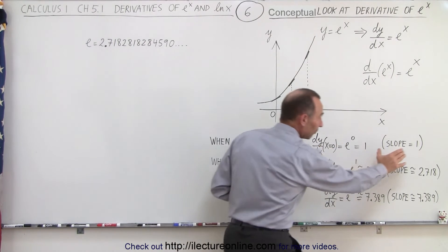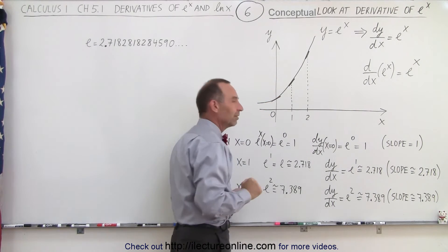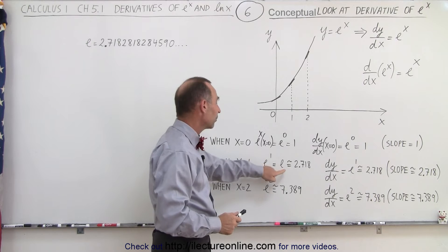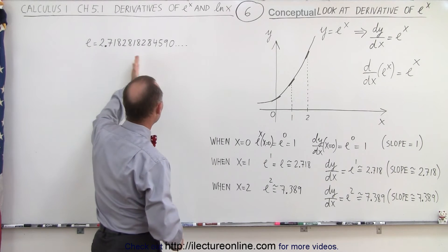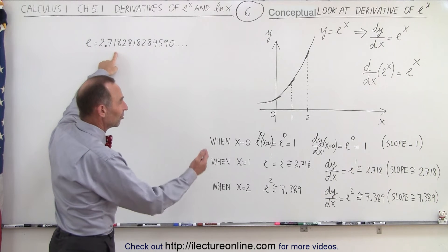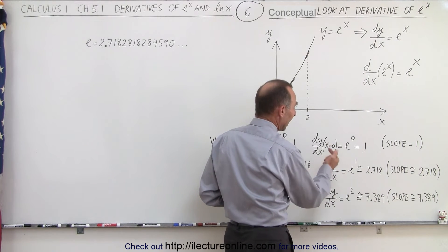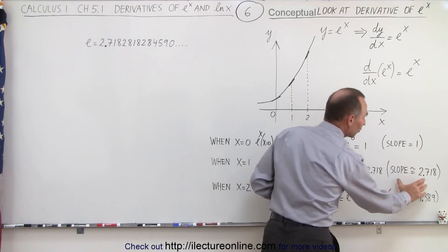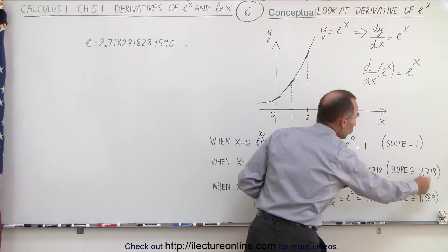That means the slope of the function is equal to 1. When x is equal to 0, the slope of the function is equal to 1. Now, what happens when we let x equal 1? Then we have e to the 1, which becomes e, approximately 2.718. It's approximately 2.718 because it's a number with a non-repeating decimal going out to infinity. The derivative when x equals 1 gives us e to the 1, which is 2.718, and that represents the slope at that point. So when x equals 1, the slope is equal to 2.718.